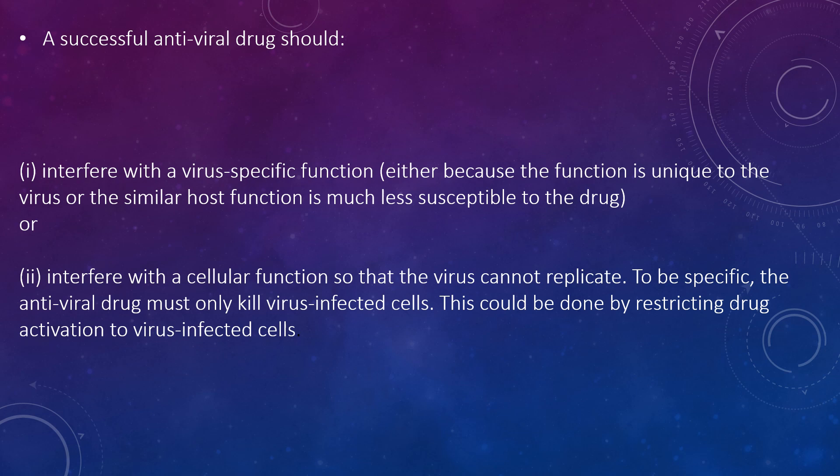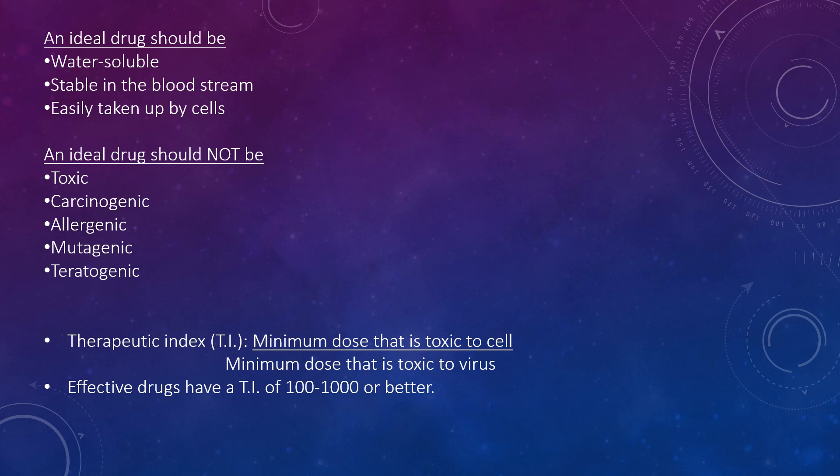The properties of an antiviral drug should be that they interfere with a virus-specific function, either because the function is unique to the virus or a similar host function is much less susceptible to the drug, or it interferes with a cellular function so the virus cannot replicate. To be specific, the antiviral drug must only kill virus-infected cells. This can be done by directing the drug's action to virus-infected cells. An ideal drug should be water-soluble, stable in the bloodstream, and easily taken up by cells.